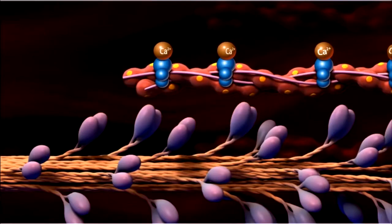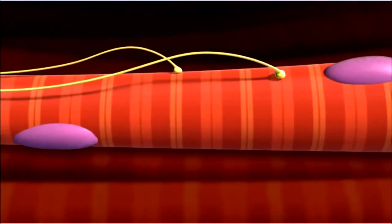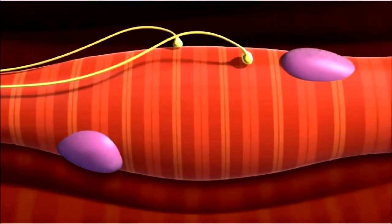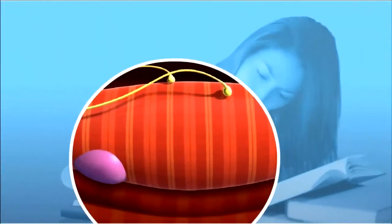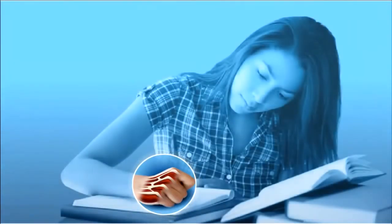As the actin and myosin slide along each other, the entire sarcomere shortens as the Z-lines draw closer to the M-line. As the sarcomeres in myofibrils contract, the entire muscle fiber will shorten. When muscle fibers contract in unison, a muscle can produce enough force to move the body, allowing you to take notes.